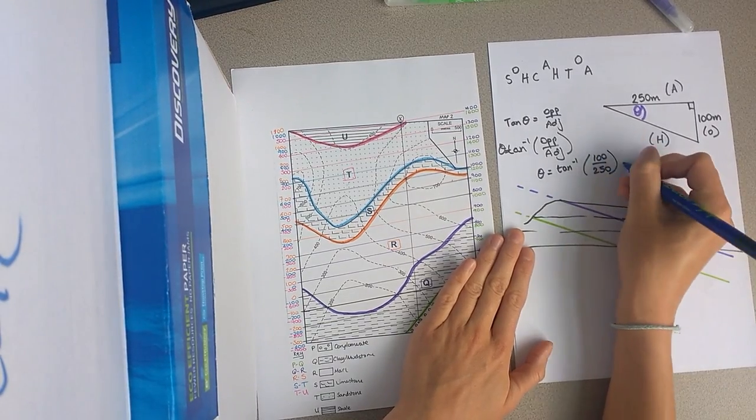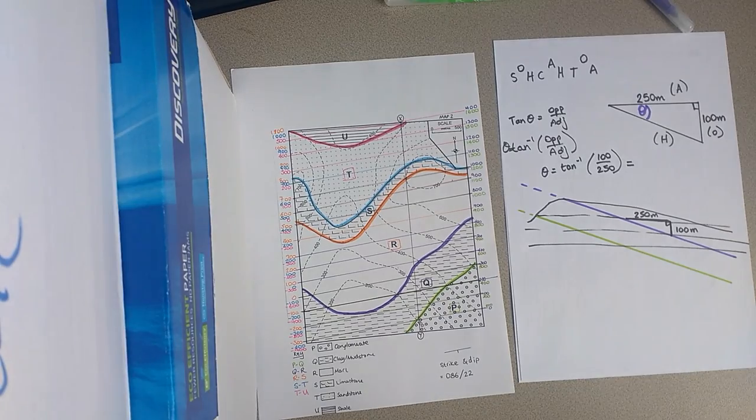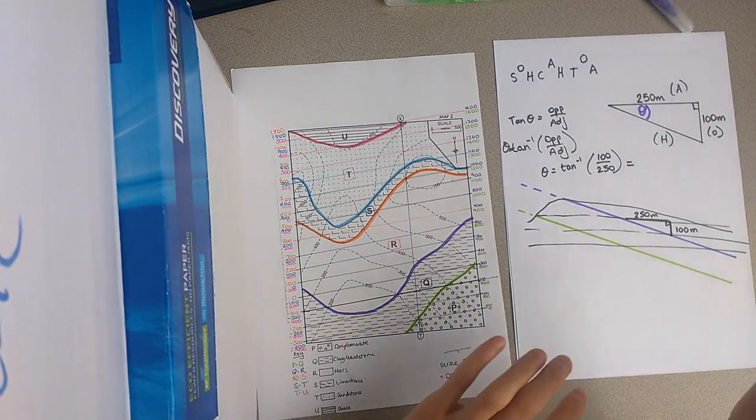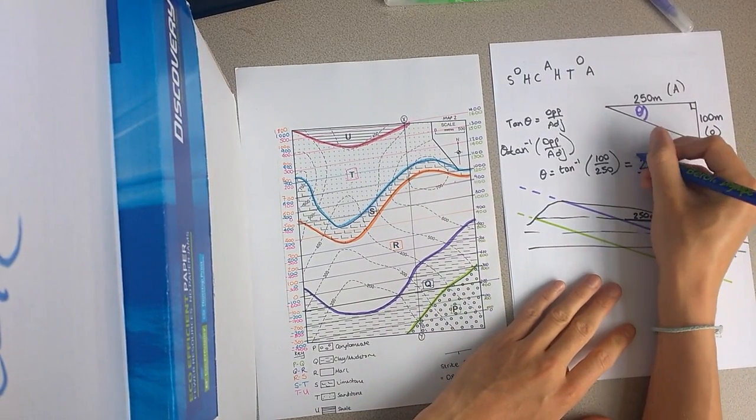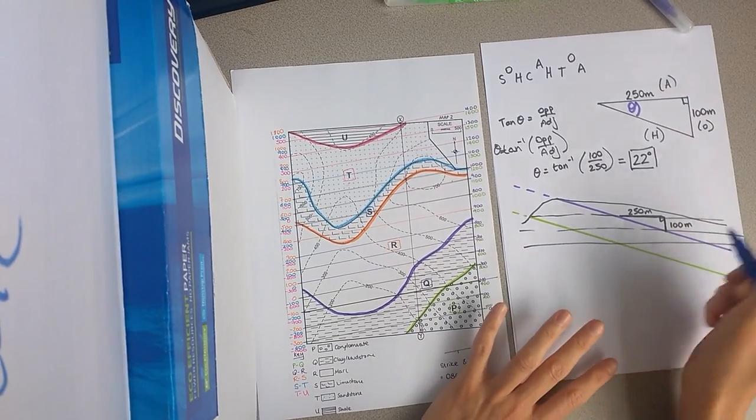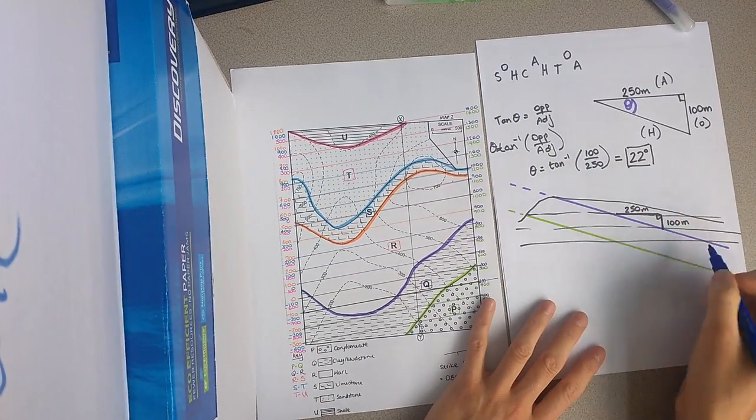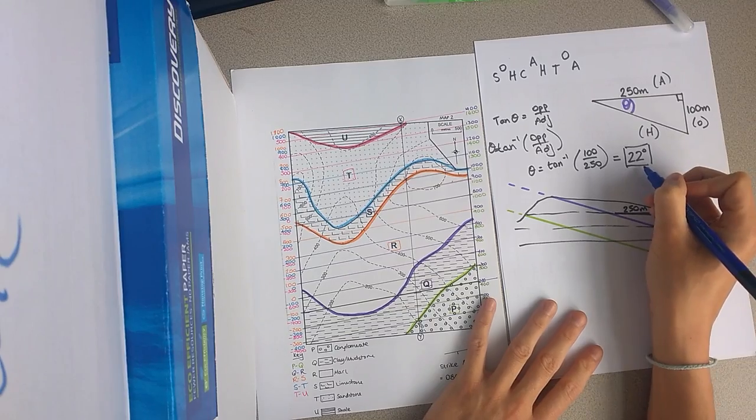So, okay, and so if we work that out, then we will get an answer of 22 degrees. So our dip for this unit is 22 degrees. That is the answer.